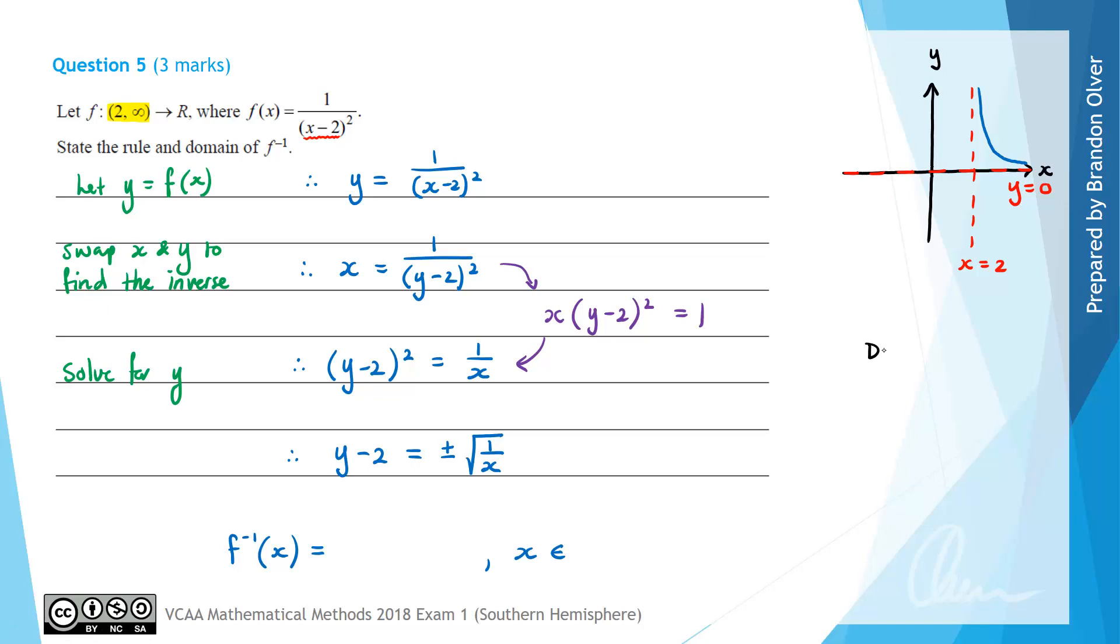Just summarizing the domain and range of the functions f and f inverse, we know the domain of f was 2 to infinity and based on the graph we can see the range is from 0 to infinity. Now for an inverse function the domain and range swap so the domain of the inverse function is going to be 0 to infinity and the range is going to be 2 to infinity.